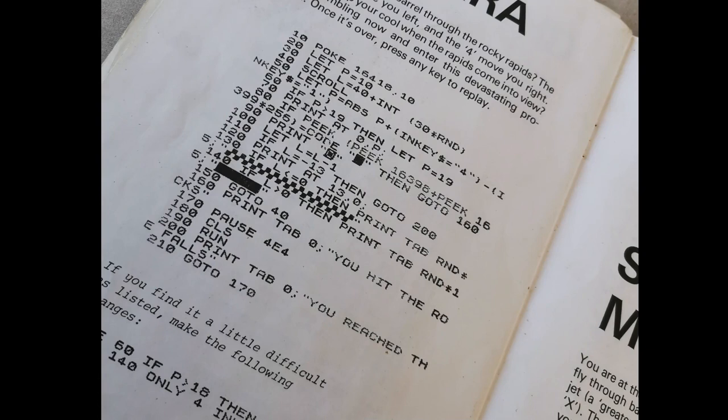Most of this stuff will work on the Spectrum Next because it is ZX BASIC and Next BASIC are pretty much from the same stock. But some things won't work - for example, on line 10 there's a POKE to a memory address that doesn't exist on the Spectrum Next. On line 80 there are PEEKs of memory addresses to read stuff off the screen - they do exist on the Spectrum Next, but at a different memory address. And line 40 has a command called SCROLL that doesn't exist on the Spectrum Next.